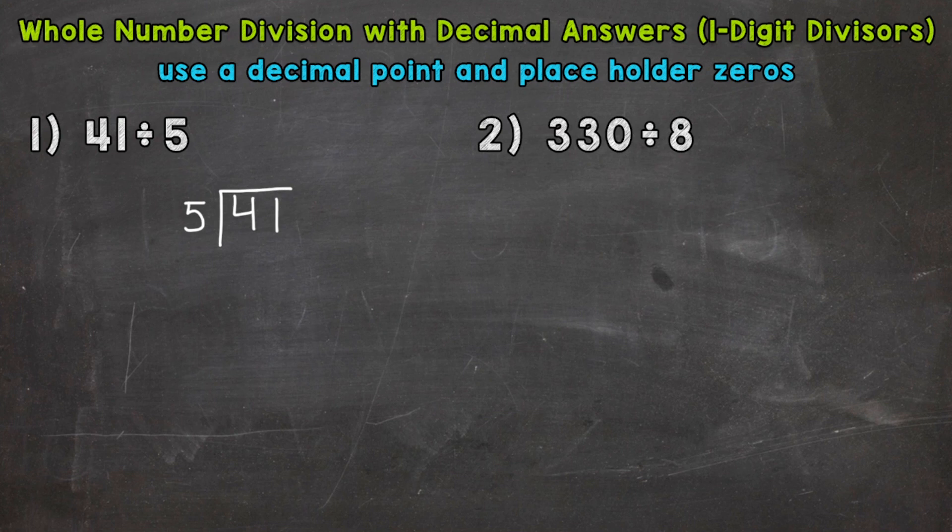So we need to look at the 41. So we have 41 divided by 5. How many whole groups of 5 out of 41? Eight. That gets us to 40. Now we multiply 8 times 5, 40. Subtract, we get 1.